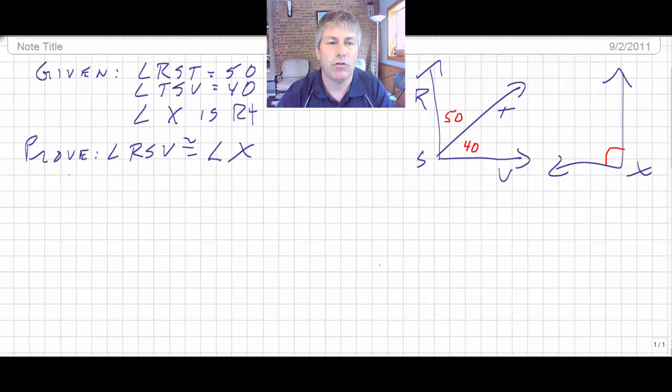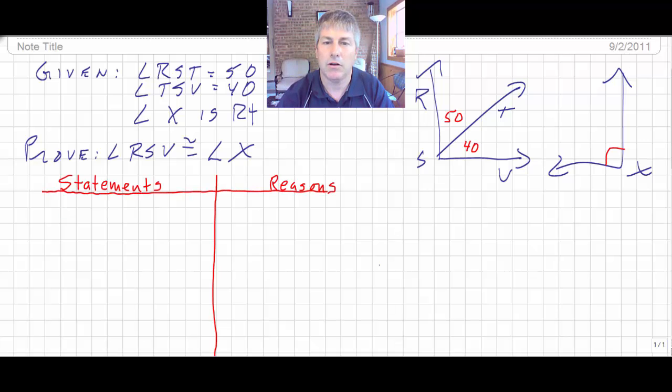And then we want to prove that angle RSV is congruent to angle X. But we'll need to go through the two column proof process. We can't just say it's really obvious that those are congruent. We've got to go through the two columns. We've got to state why. So copy your statements and reasons down. Draw your two columns. And this is not as easy as I make it look.